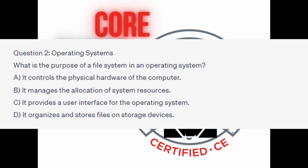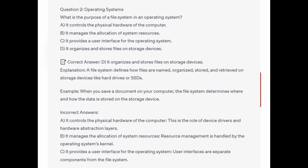You now have 5 seconds. And the quick answer is D: it organizes and stores files on storage devices. A file system defines how files are named, organized, stored, and retrieved on storage devices like hard drives or SSDs. When you save a document on your computer, the file system determines where and how the data is stored on the storage device.